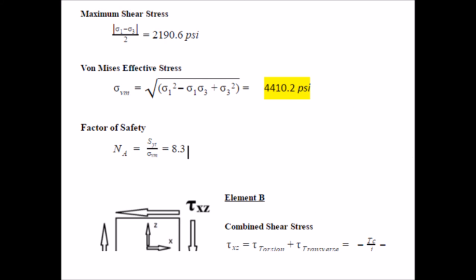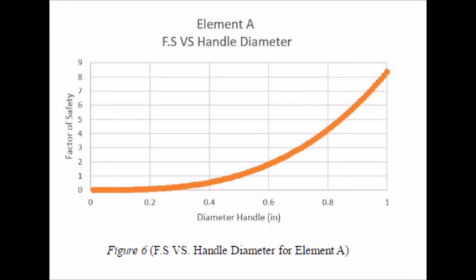After calculating the principal stresses on these elements, the von Mises effective stress was found and compared to the tensile yield strength of 6061 T6 aluminum alloy, which is 35 kips per square inch. The effective von Mises stress was 4,410 pounds per square inch. Element A had a safety factor of 8.3 while element B had a safety factor of 14.9. A slight modification was suggested that the handle diameter be reduced to 3/4 of an inch, so that the safety factor would be greater than one, but manufacturing would be cheaper.